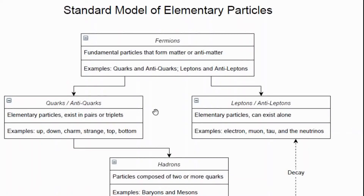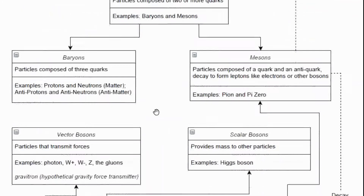Then we have the leptons — these are elementary particles that can exist alone. A quark can only exist in a triplet or pair, but leptons can exist on their own. The leptons include the electron, which is the most familiar, the different neutrinos, and the muon and tau particles as well.